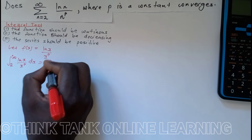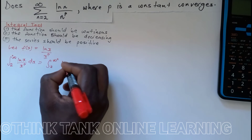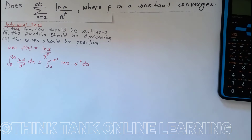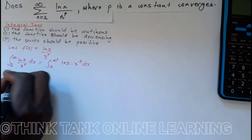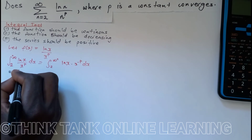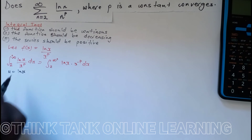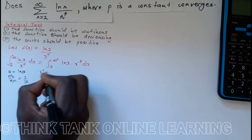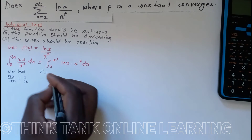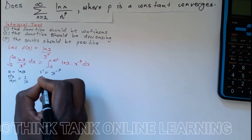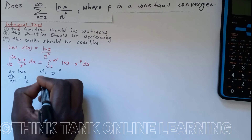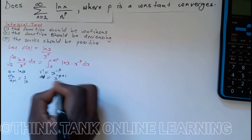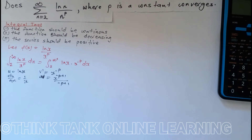We need to integrate this using integration by parts. I'll rewrite it as the integral from 2 to infinity of ln(x) times x^(−p) dx. For integration by parts, u should be something easy to differentiate — in this case ln(x). So u = ln(x), du/dx = 1/x. The v' is x^(−p), which is not easy to integrate, and integrating gives v = x^(−p+1) / (−p+1).